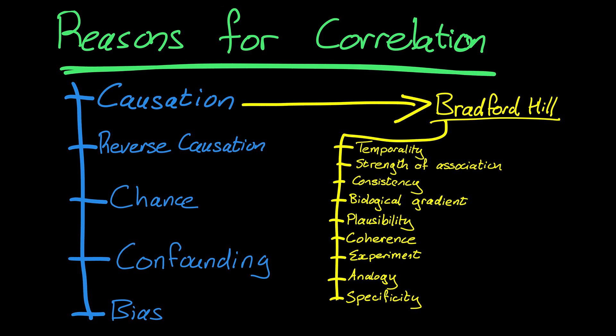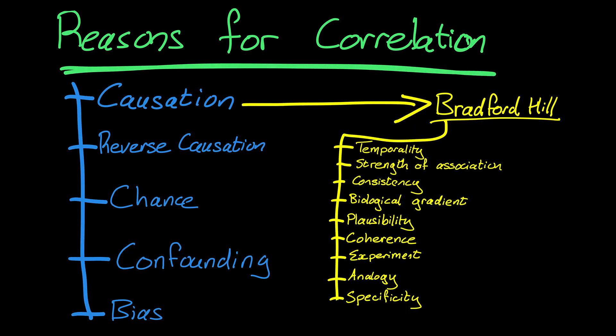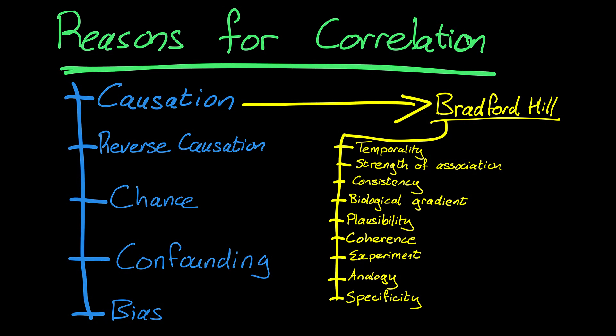Then there's bias. Some people think of confounding as a type of bias, but I don't. I think of confounding as something different because if you collect information about confounding variables, you can still draw the correct conclusion from your study — your study itself is not necessarily biased. A biased study is one where something is amiss: you've either collected the data incorrectly, you've categorized something incorrectly, and the data you've got is not reliable. A bias can incorrectly give you a sense of causation — it can give you a correlation that's not real.